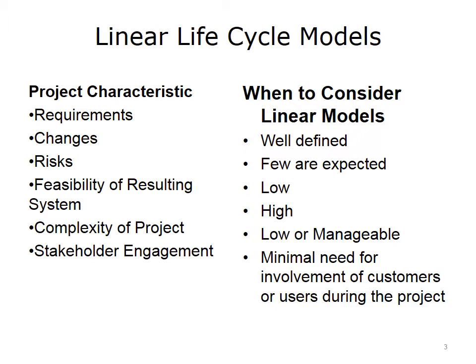All of the lifecycle models will be examined using a set of project characteristics that will help you discriminate the differences between the four models. The six types of characteristics are shown in the left column of this table, detailing the linear model, and we will continue to use these six characteristics when we discuss the other models. The characteristics relate to the requirements, changes, risks, the feasibility of the resulting system, the complexity of your project, and the engagement you have with stakeholders.